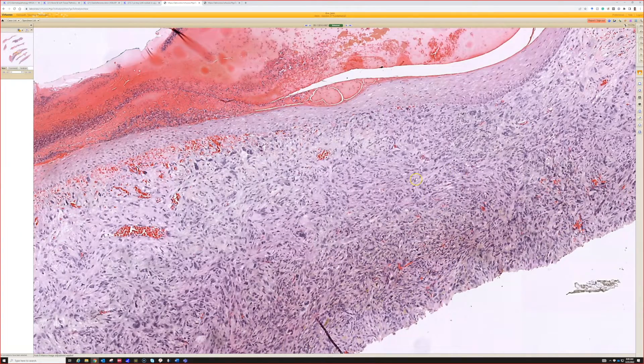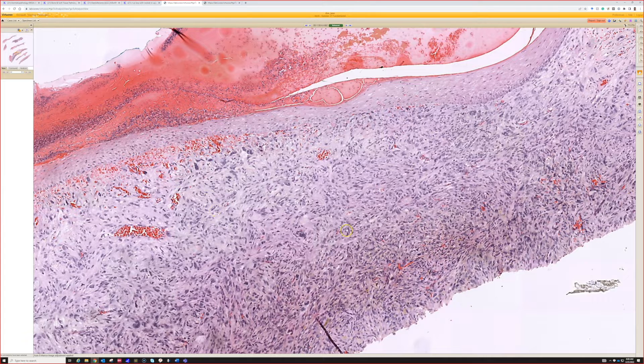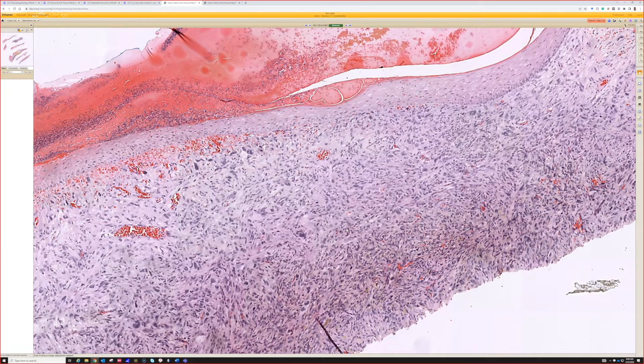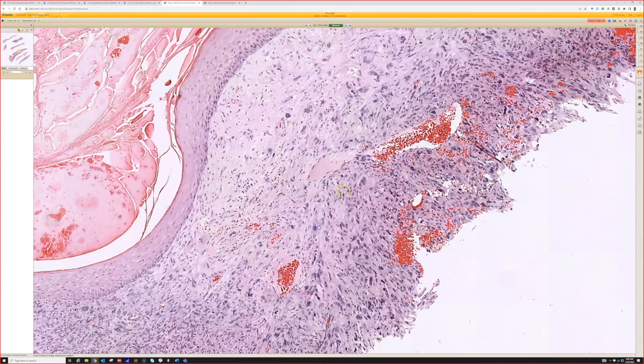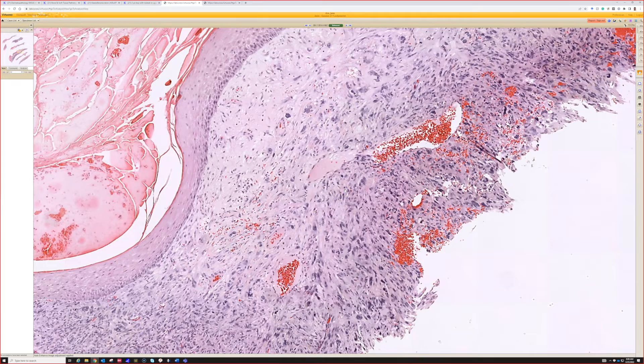And then A, for angiosarcoma. Angiosarcoma can occasionally have solid areas that look just like this. And A also stands for AFX, atypical fibrous xanthoma. AFX is an ugly spindle lesion that basically is a diagnosis of exclusion. It's kind of like a pleomorphic sarcoma that's only up in the skin, in the dermis and small, and has a very good prognosis despite being super ugly looking microscopically. And then M stands for spindle cell melanoma.